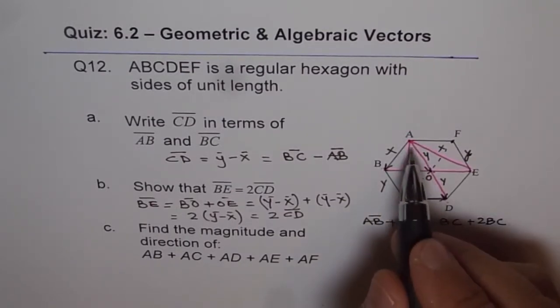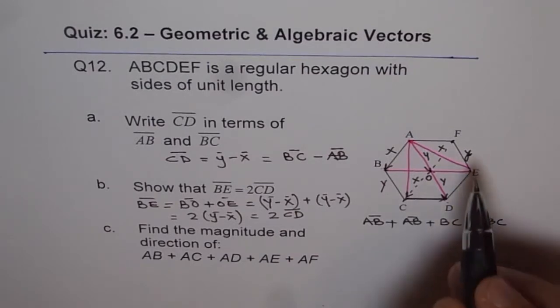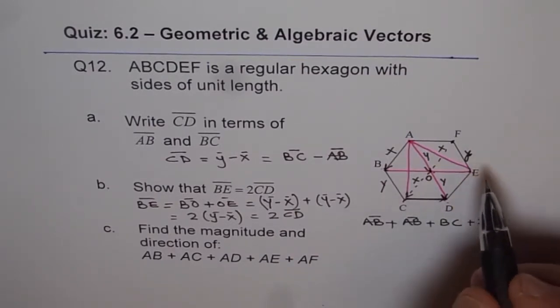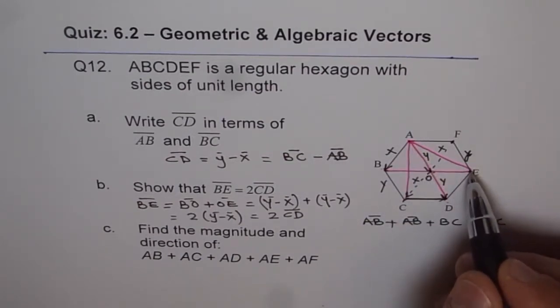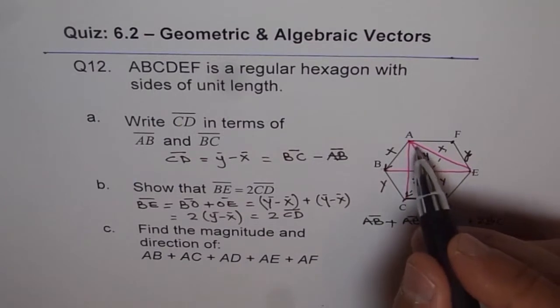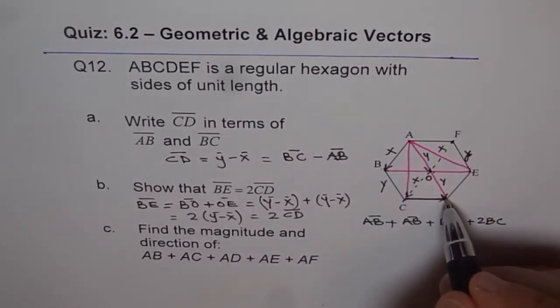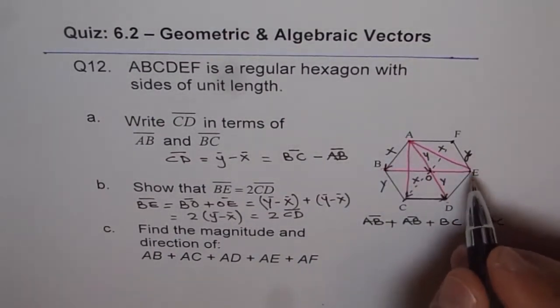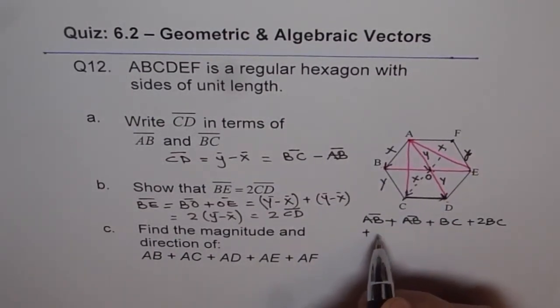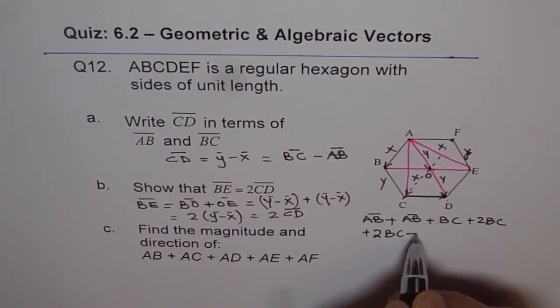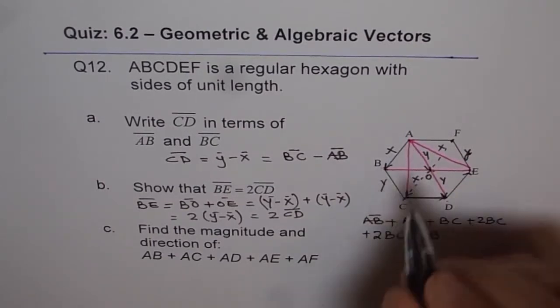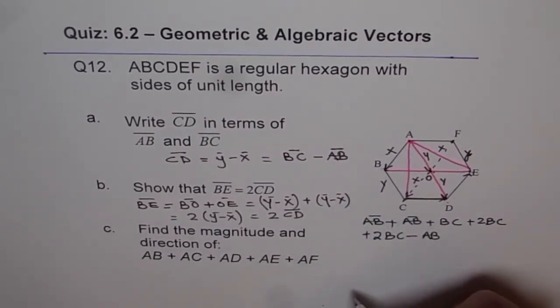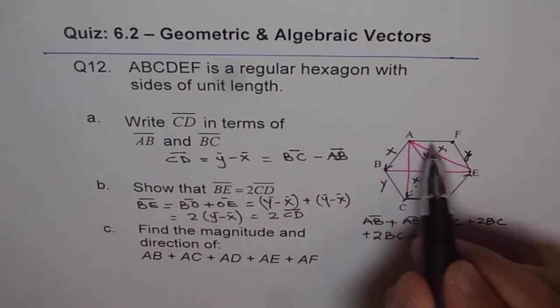And now AE. AE can be written as a combination from here. In that case, it is 2 times BC plus DE, and DE is minus of AB. So we will write 2 times BC minus AB since that goes in the opposite direction as compared to AB.